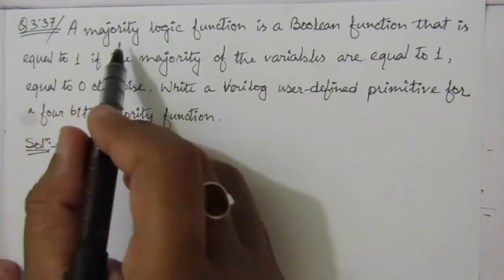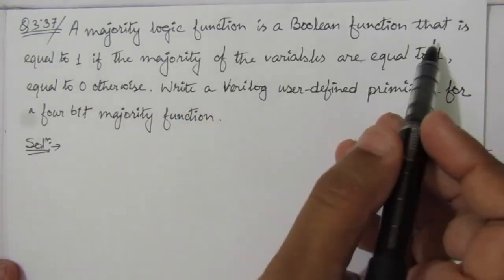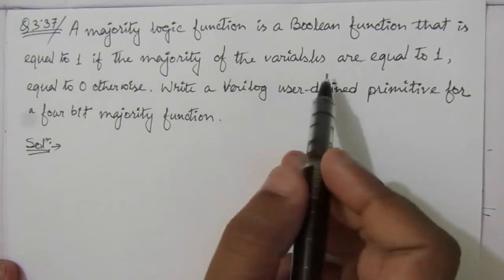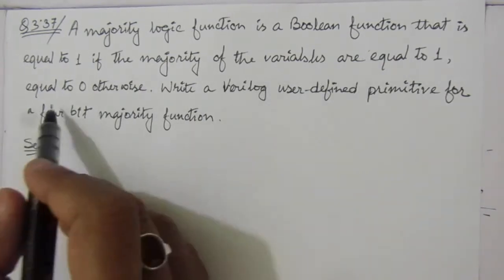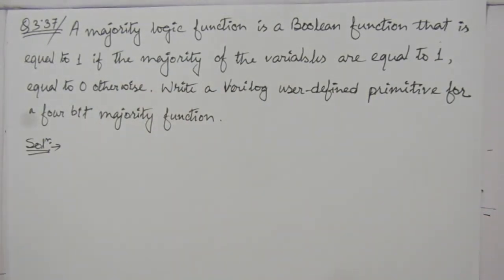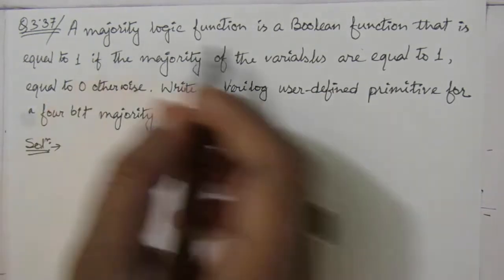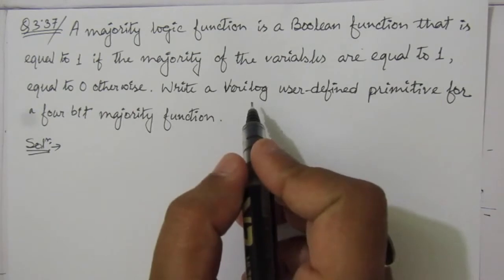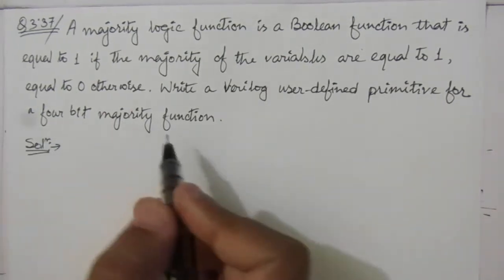The problem states: a majority logic function is a boolean function that is equal to 1 if the majority of the variables are equal to 1, and equal to 0 otherwise. For example, if we have 5 digits and 3 of them are 1, then the majority logic function gives 1. If 3 or more digits are 0, we get 0. The task is to write a Verilog User Defined Primitive for a 4-bit majority function.